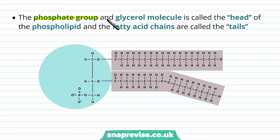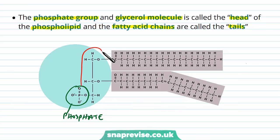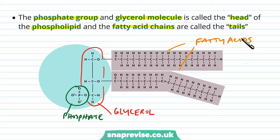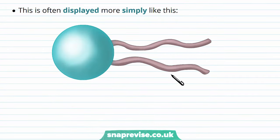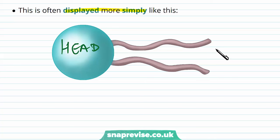The phosphate group and the glycerol molecule together are called the head of the phospholipid, and the fatty acid chains are known as the tails. We have the phosphate here, the glycerol molecule attached to it, and the two fatty acid chains coming off the glycerol — the phosphate and glycerol region is the head, and the two chains are the tails. In models, the head is usually depicted as a round sphere-like structure and the two fatty acid tails are depicted as two tails extending from it. This is how one single phospholipid tends to be shown.